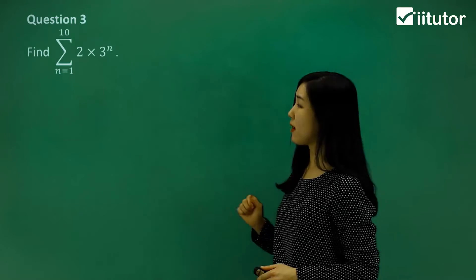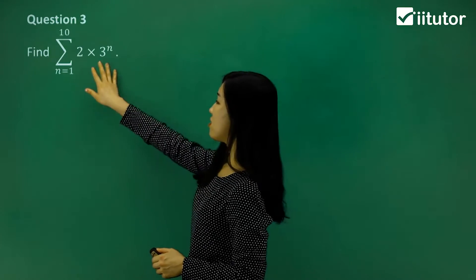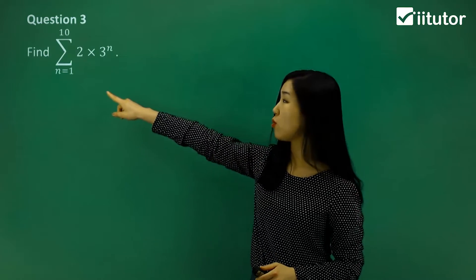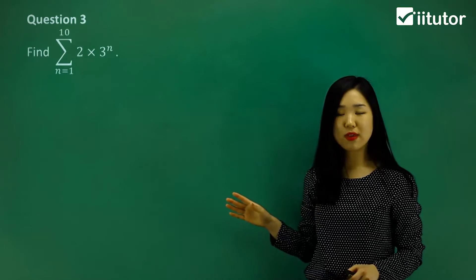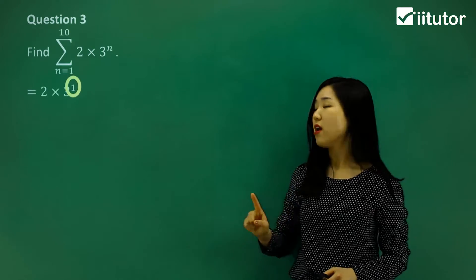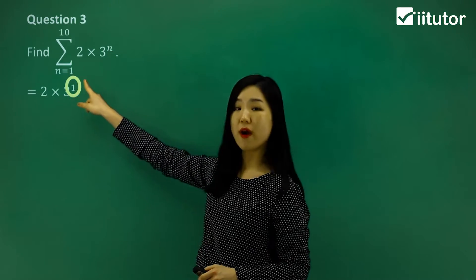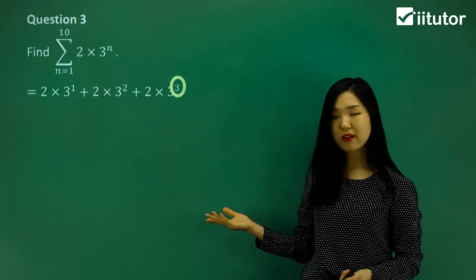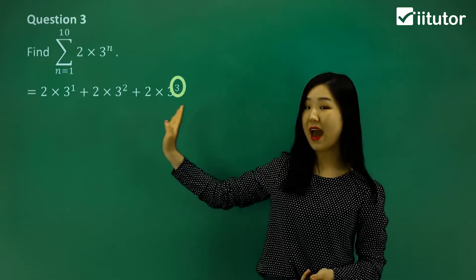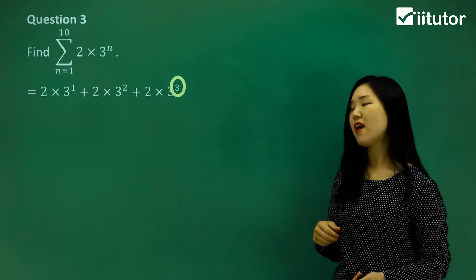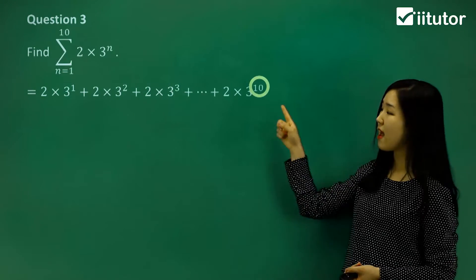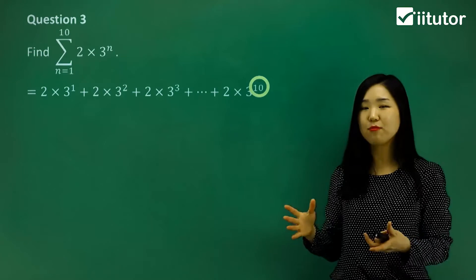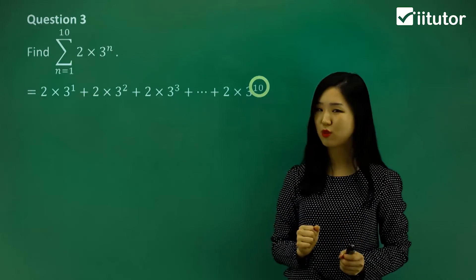Let's go to question 3. The formula this time is a little different — it's 2 times 3 to the power of n. We start with n equals 1 all the way to n equals 10. We'll start with n equals 1, so it's 2 times 3 to the power of 1. Then replace it with 2: 2 times 3 to the power of 2. Then replace with 3: 2 times 3 to the power of 3. We're always adding since it's a sum, going all the way to when n equals 10. I'm not going to write everything in between as it would take too much time.